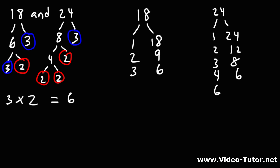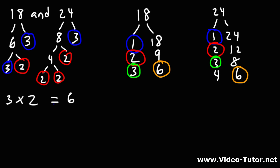Now let's identify the common factors from the list we just drew. 1 is a common factor of 18 and 24. 2 is a common factor of 18 and 24. The same is true for 3. 4 is a factor of 24 but not 18, so 4 is not a common factor. 6 is a common factor of both. 8 is a factor of 24 but not 18. 9 is a factor of 18 but not 24. So 1, 2, 3, and 6 are common factors of 18 and 24. The greatest of those four numbers is 6, and so that is the greatest common factor. That's how you can confirm it using the second method.